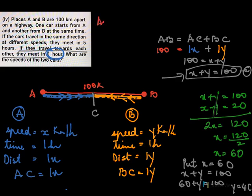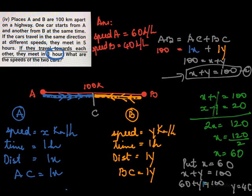The speed of car A, which was taken as X, is 60 kilometers per hour, and the speed of car B, taken as Y, is 40 kilometers per hour.